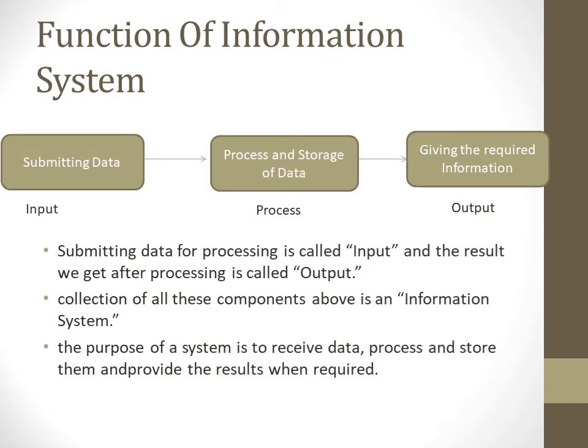Let's see how an information system functions. We submit some data which is called input, then there is processing and storage — we call that the process — and it gives some required information as output. Submitting the data to the processing is called input, and what we receive back is called output.